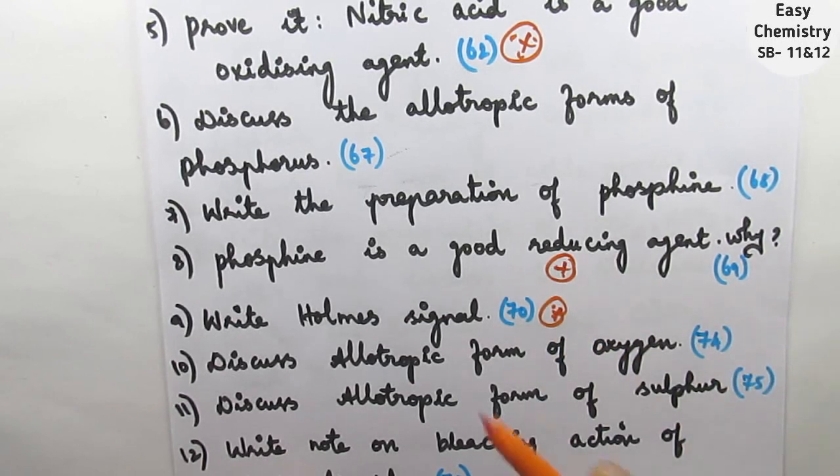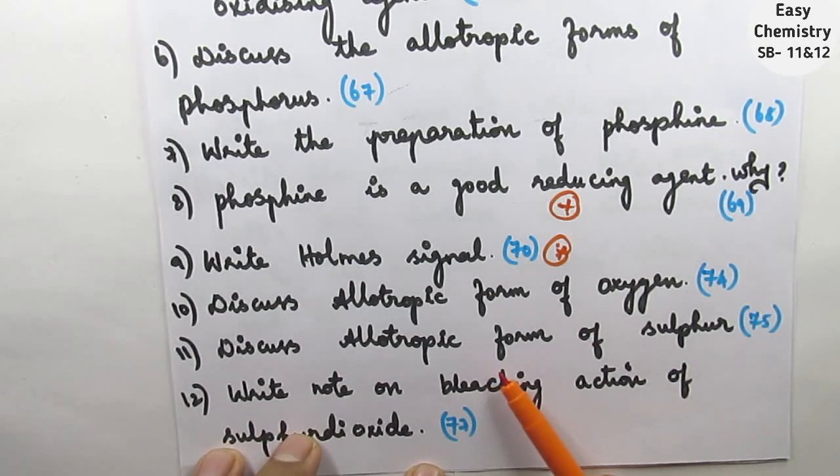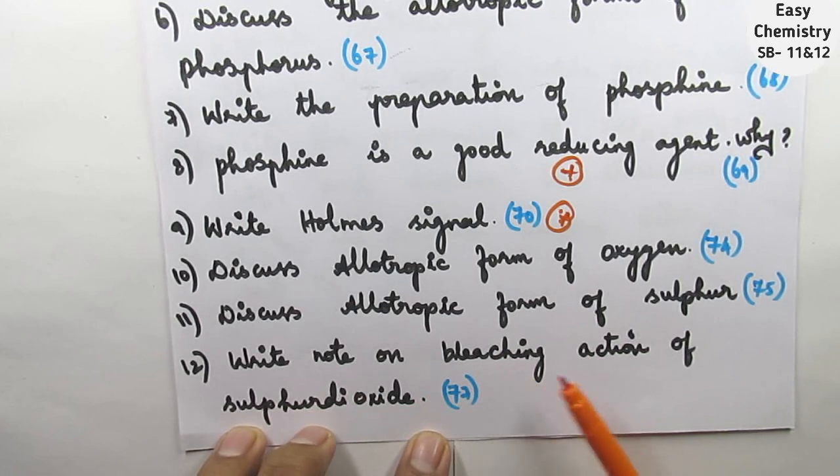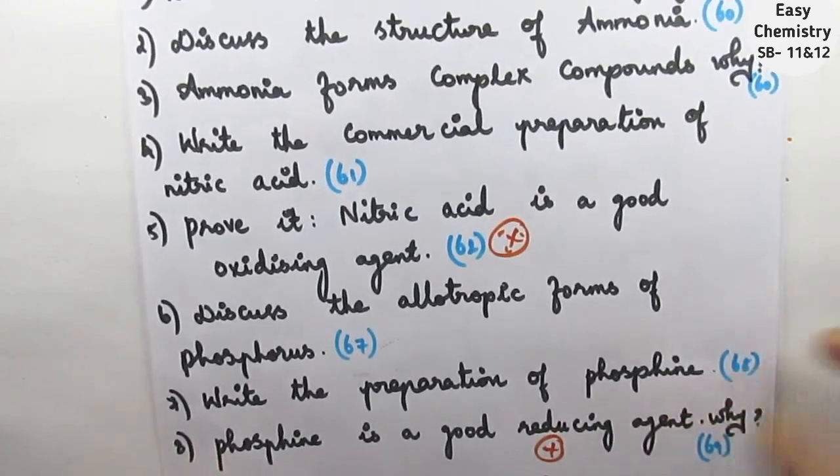Next, discuss the allotropic form of oxygen. Question number 11: discuss the allotropic form of sulfur. Question number 12: write note on bleaching action of sulfur dioxide. This is page number 77.